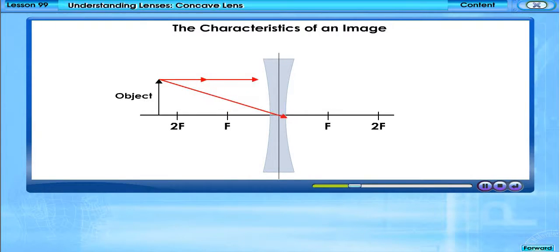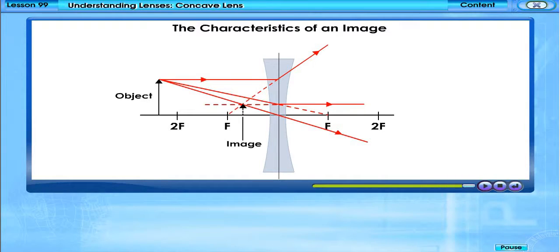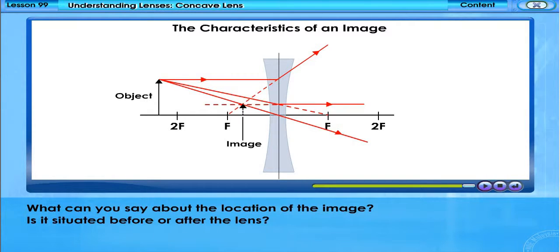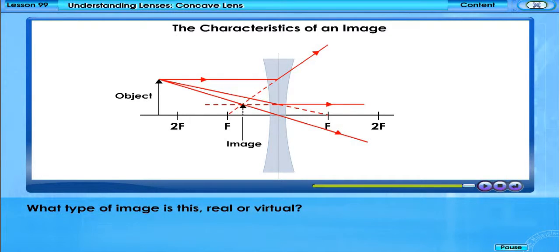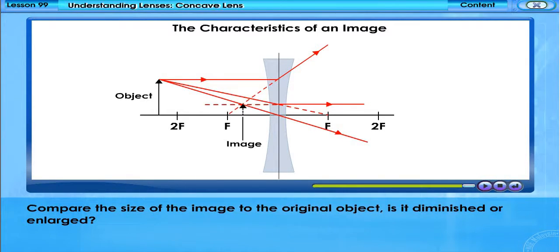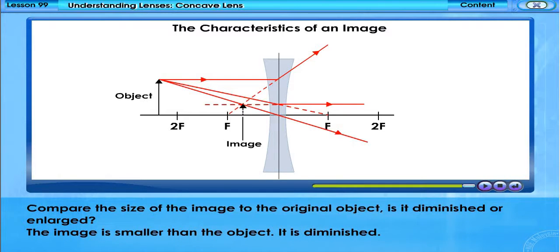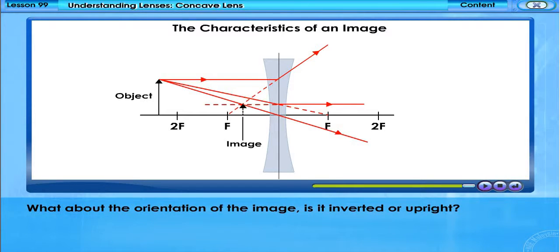Look at the image formed by the lens. What can you say about the location of the image? Is it situated before or after the lens? The image is situated before the lens — it lies between the object and the lens. What type of image is this — real or virtual? The image is virtual. Compare the size of the image to the original object: is it diminished or enlarged? The image is smaller than the object; it is diminished. What about the orientation — is it inverted or upright? The image is upright.